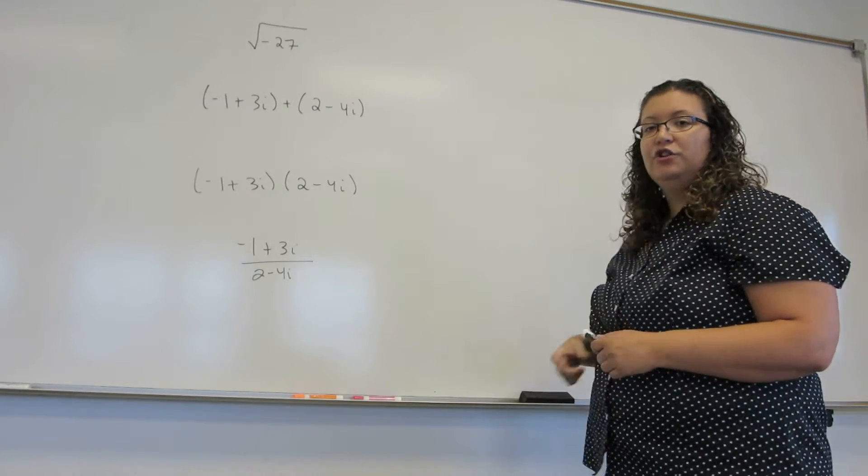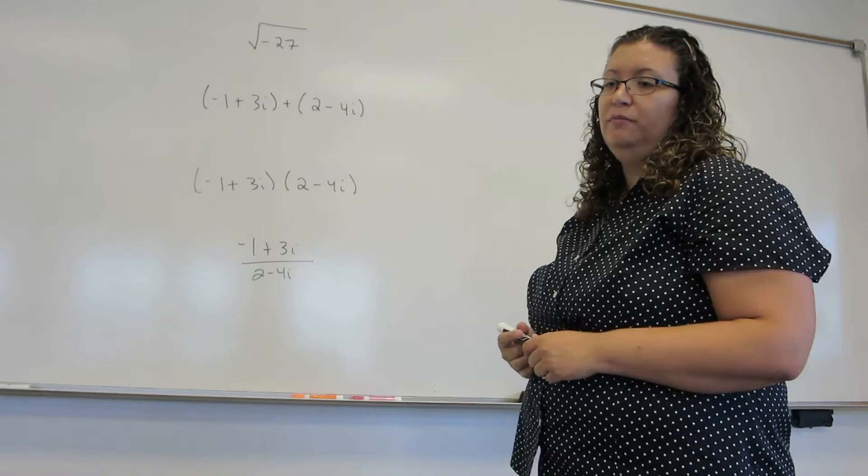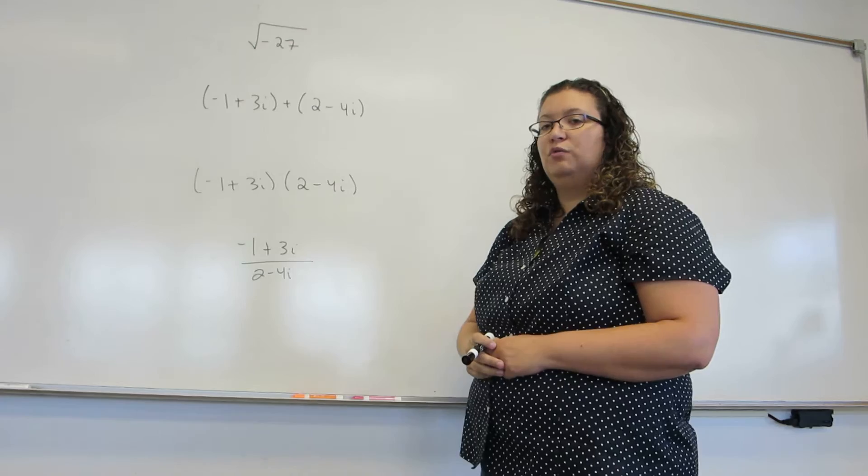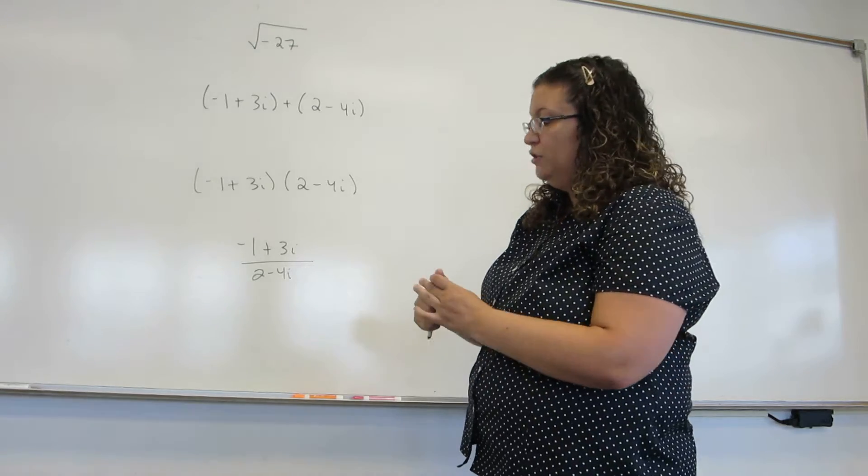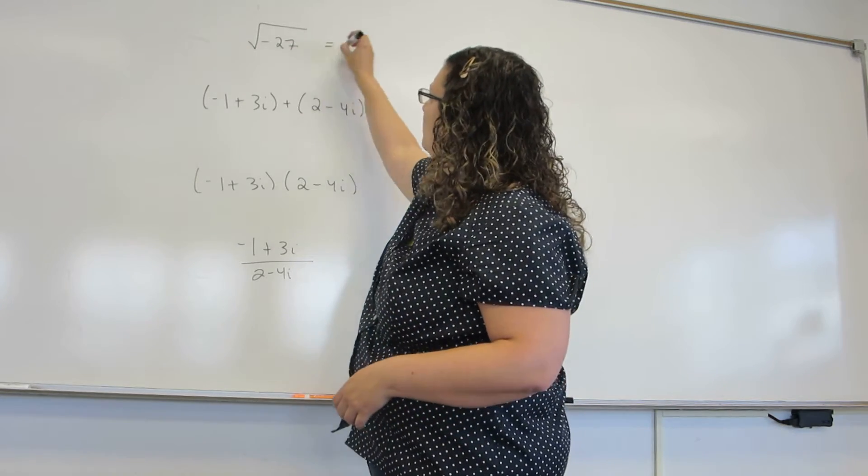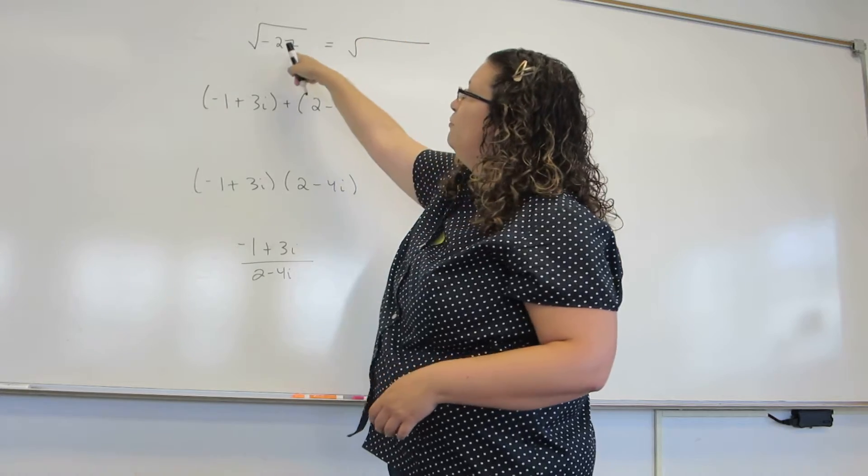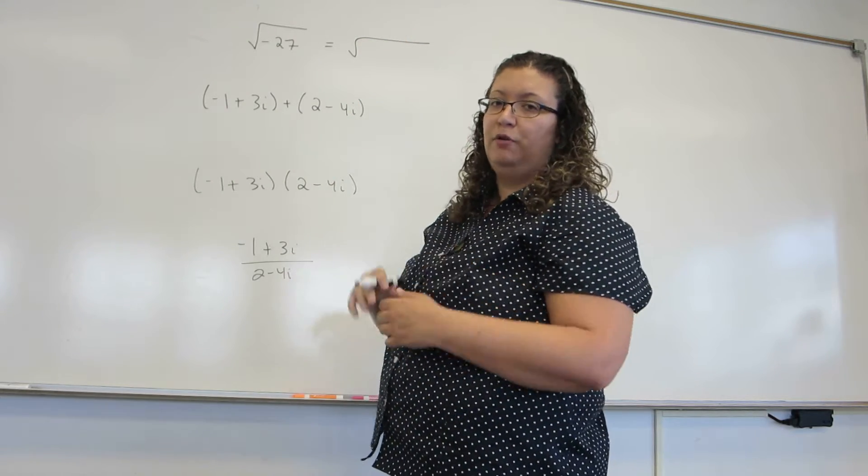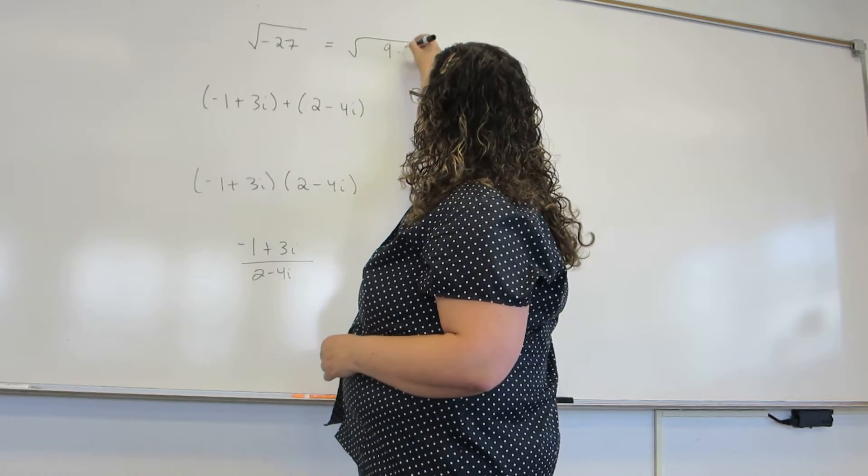Now, let's make sure we know how to deal with complex numbers. Imagine we want to simplify the square root of minus 27. Well, just like we do if it was a positive number, we want to separate out the perfect square inside 27 from the part that's not a perfect square. So 9 times 3.